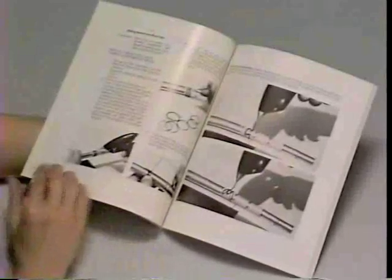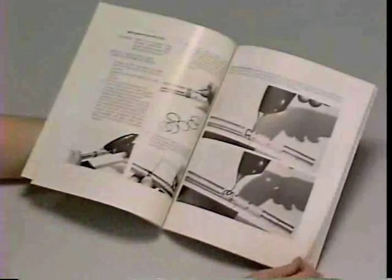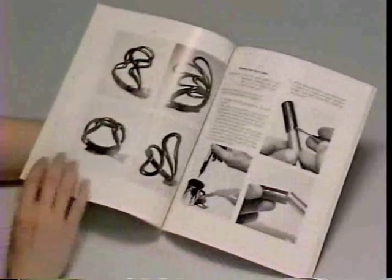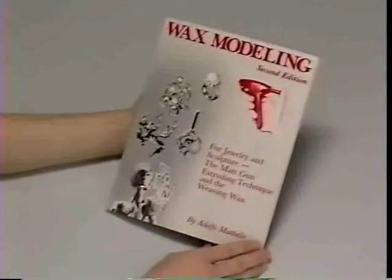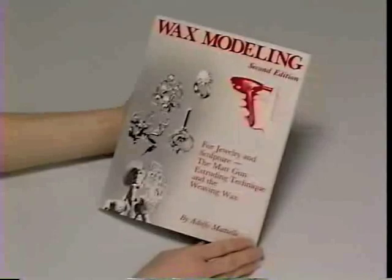You can also create rings in two or three parts, then weld the parts together. These instructions are featured in the book, Wax Modeling Included in the Matte Gun Kit. Try some of the projects featured in the book to expand your ability.